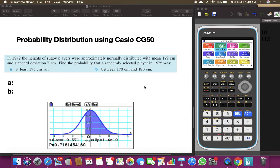We need to find out the probability for a randomly selected person. There are two questions: at least 175 centimeters tall, and the second one is between 170 and 190 centimeters.